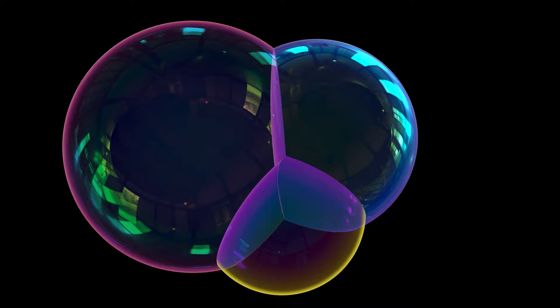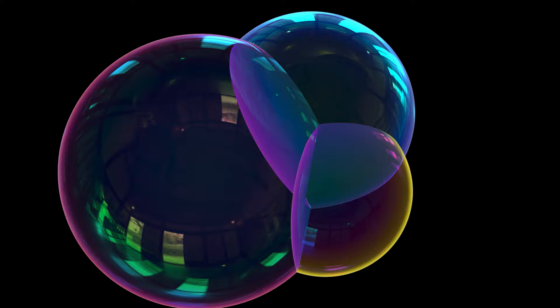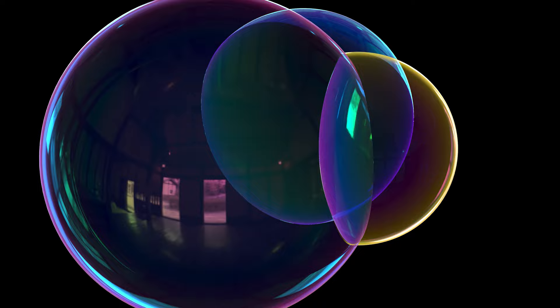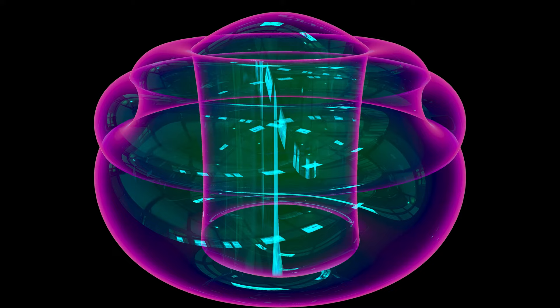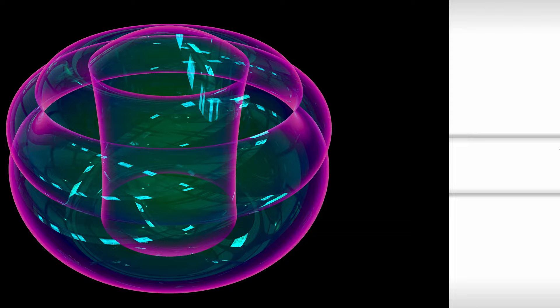That's about 109 degrees. This triple bubble has been the conjectured solution to this optimization problem. But how do you prove that it is indeed the optimal solution? How do you know, for example, that there isn't some weird kind of shape that encloses three volumes but in some strange sort of topology?